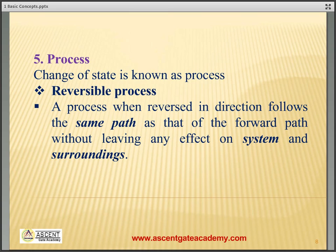Gibbs phase rule: F plus P equals C plus 2, where P is the number of phases (solid, liquid, or gas), F is the minimum number of independent intensive variables, and C is the number of components. For example, in a mixture of O2 and N2, the number of components C is equal to 2.